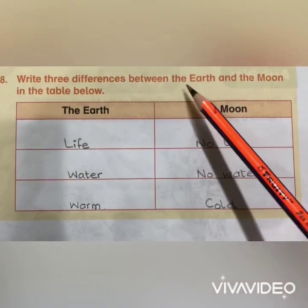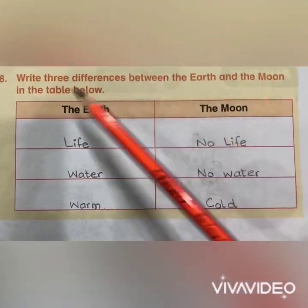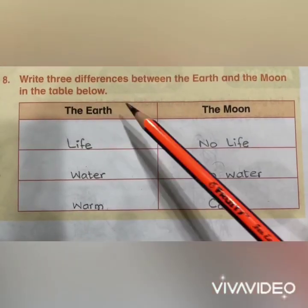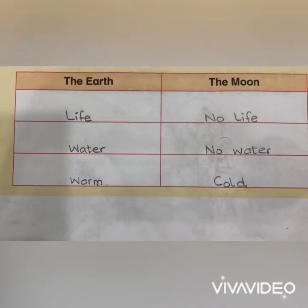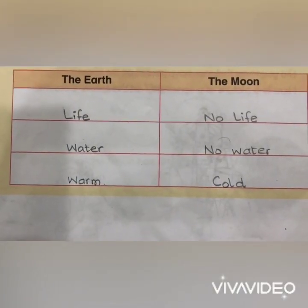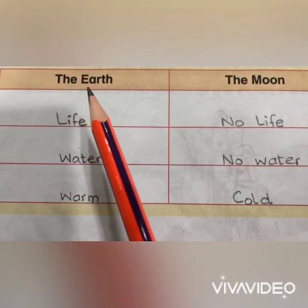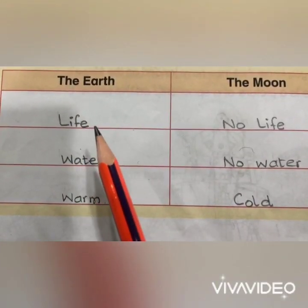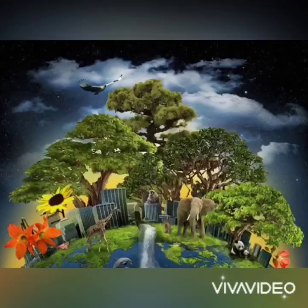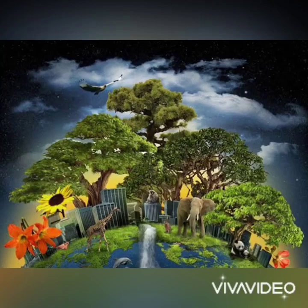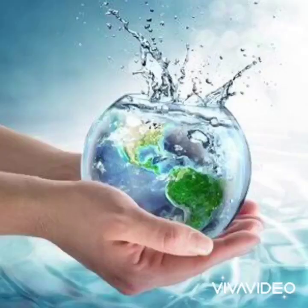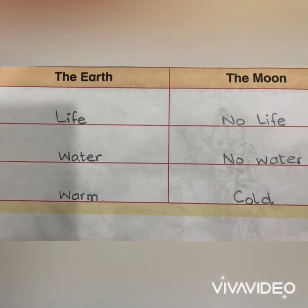Write three differences between the earth and the moon in the table below. I have already written the differences for your convenience. Under Earth, you will write: the earth has life, the earth has water, and the earth is warm.